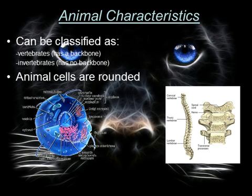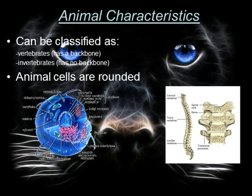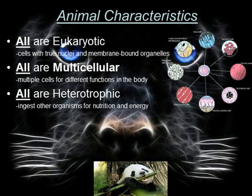Other characteristics animals have are: animals can be classified as vertebrates or invertebrates, and animal cells are rounded unlike plant cells. So there you have it — these are what make animal characteristics different from plant characteristics.